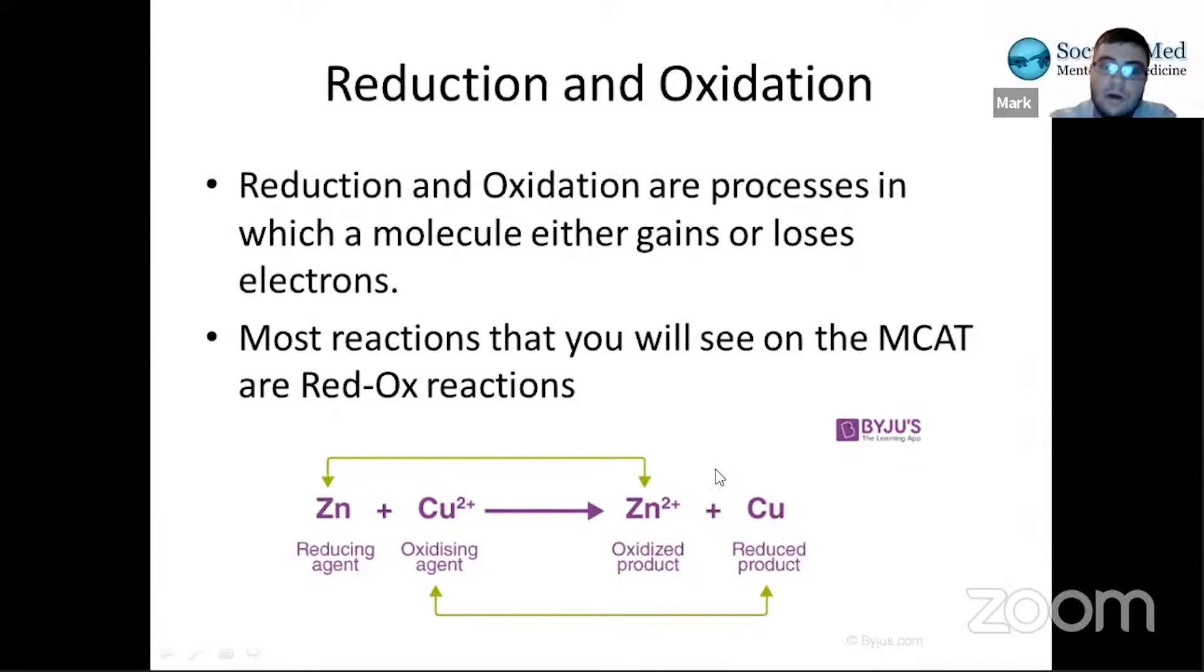Copper, on the other hand, started off as copper two plus, meaning it already had two less electrons than it had protons. And then at the end, it became neutral. So that means it gained electrons. It was lacking two electrons, and then it gained those two electrons back. So it got reduced.